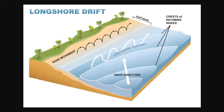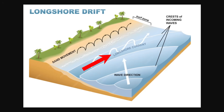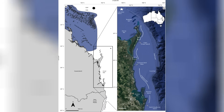Longshore drift is how sand moves along a coastline, or along the shore. It appears in areas where the waves come at the shore at an angle, and this causes the sand to be moved up at that angle and then back down into the water, creating a zigzag pattern along the coast. But this process is very slow, and that's not the primary way the sand moves. The main way the sand moves long distances along the coast is through the longshore current. When the waves move the sand into the ocean, it gets picked up by a current moving along the shoreline and carried many miles up the coastline. Here's a map of the longshore currents along the eastern coast of Australia.